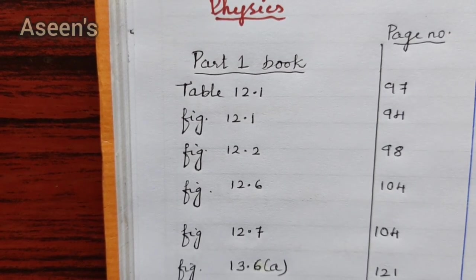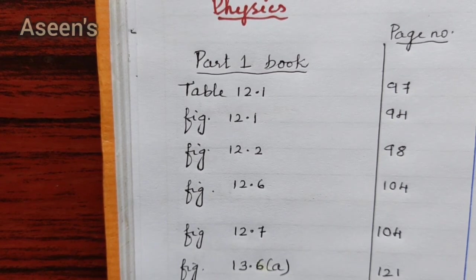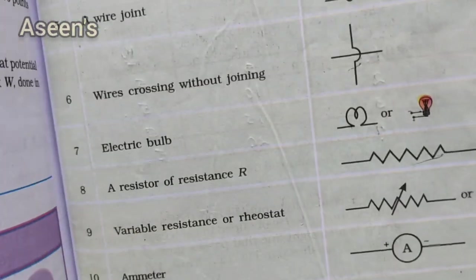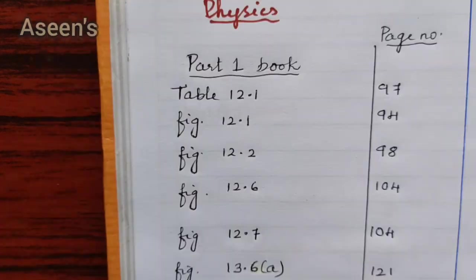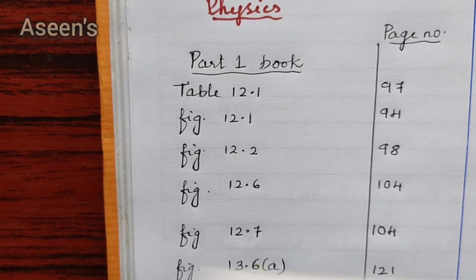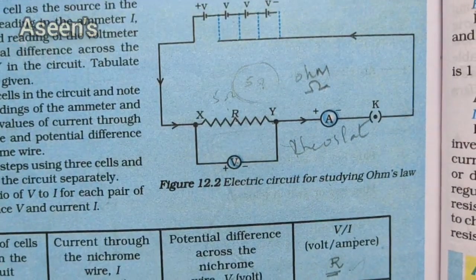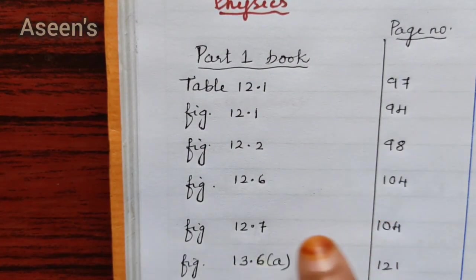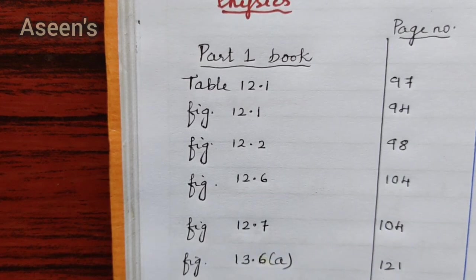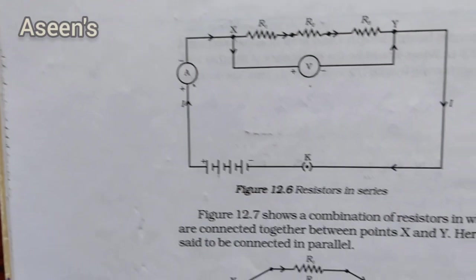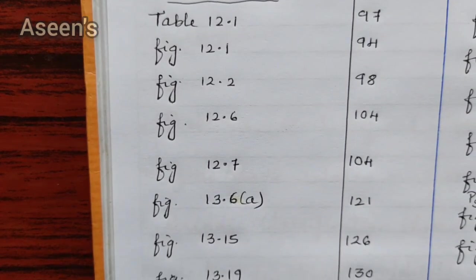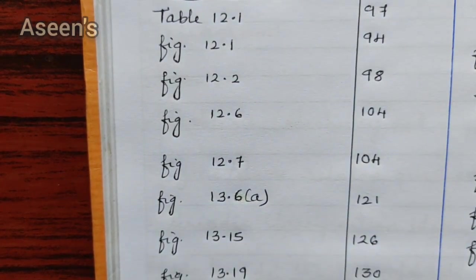Here are the physics Part 1 diagrams: Figure 12.1 on page number 94; Figure 12.2 on page number 98, which is for Ohm's law; then on page number 104, figures 12.6 and 12.7 — these are the circuit diagrams for resistors in series and resistors in parallel. The next diagram is from the next chapter on page number 121.